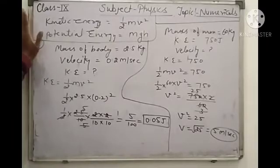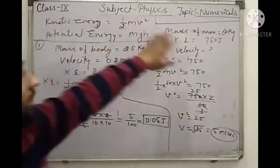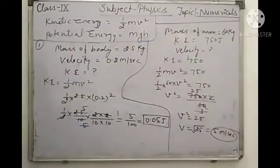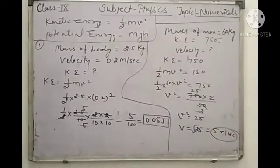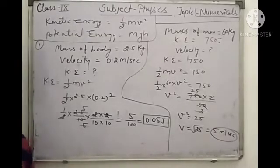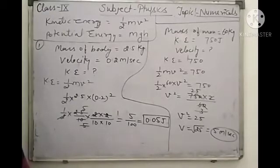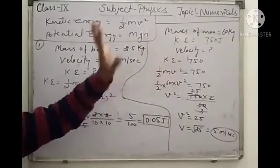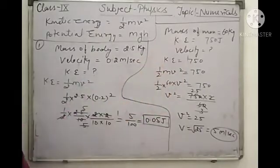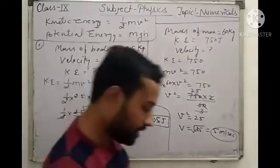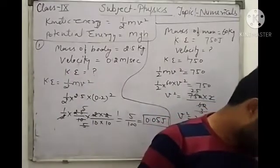That means a 60 kg person has to run at 5 metres per second so that their kinetic energy is 750 Joules. The most important thing about this numerical: if you have a statement, first identify what is given and what is to be found, then read the statement carefully and apply the formula. These two numericals are based on kinetic energy.